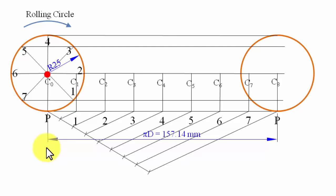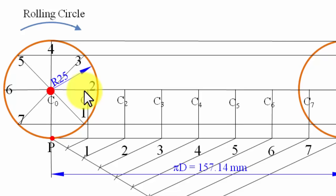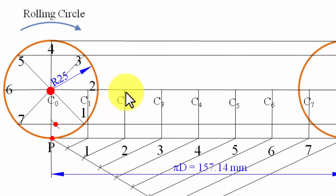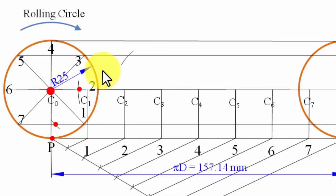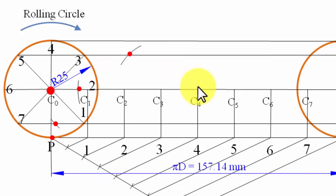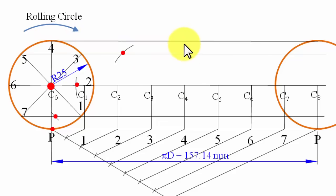The point we're tracking starts in contact with the ground. When the center moves to C1, with C1 as center and radius 25 mm, draw an arc intersecting the horizontal line through point 1 — this gives point P1. Similarly, with C2 as center, draw an arc through the horizontal line of point 2 to get P2. With C3 as center, arc through line 3 gives P3. With C4 as center, arc through line 4 gives P4 — here the arc touches the line rather than crossing it.